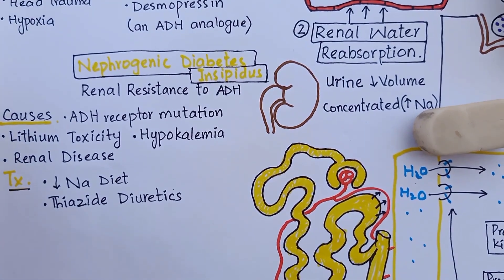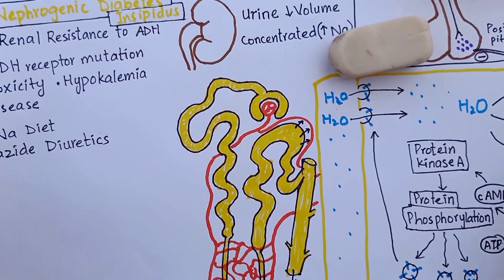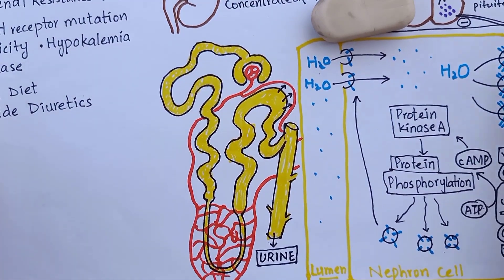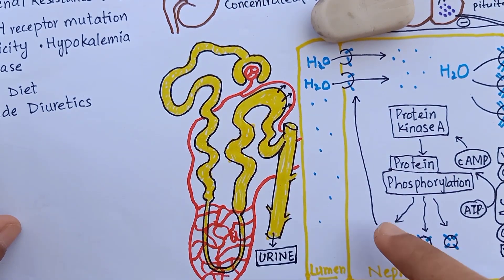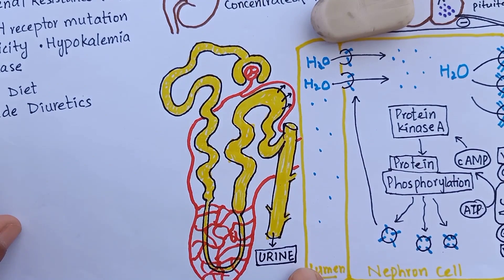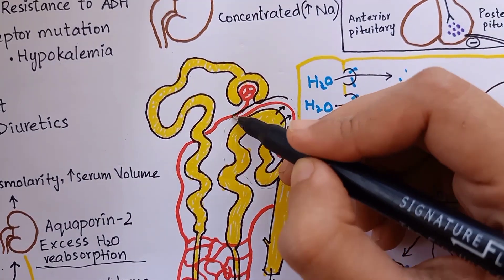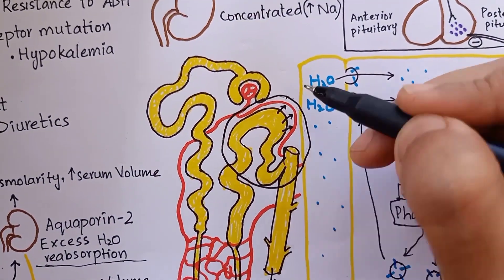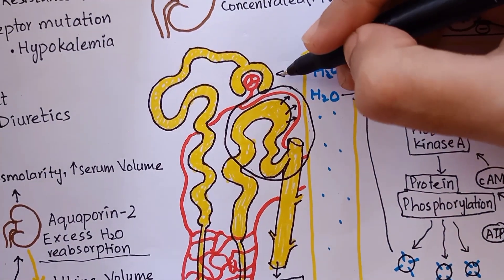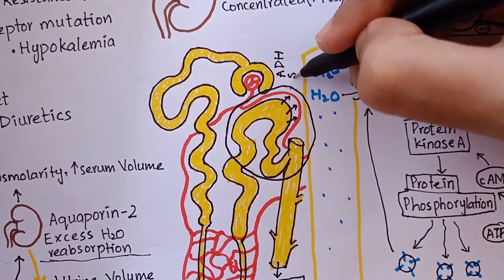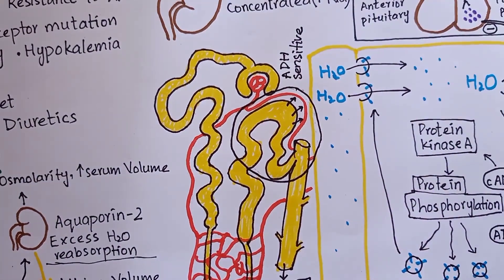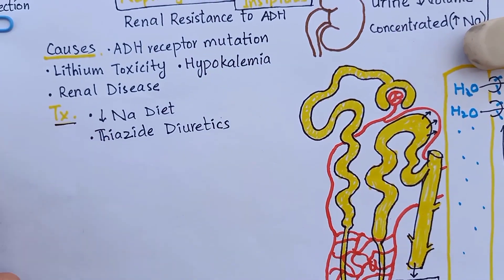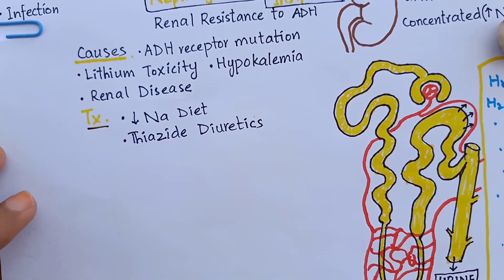It's a bit tricky to understand. Thiazide diuretics induce volume depletion in the proximal portion of the nephron, causing less fluid flow to the ADH-sensitive distal portion. This action prevents excess volume loss in the distal portion of the nephron, as already less fluid is reaching there.